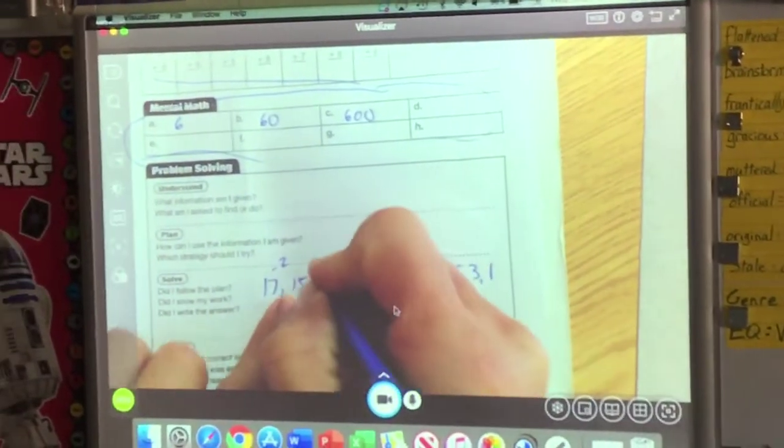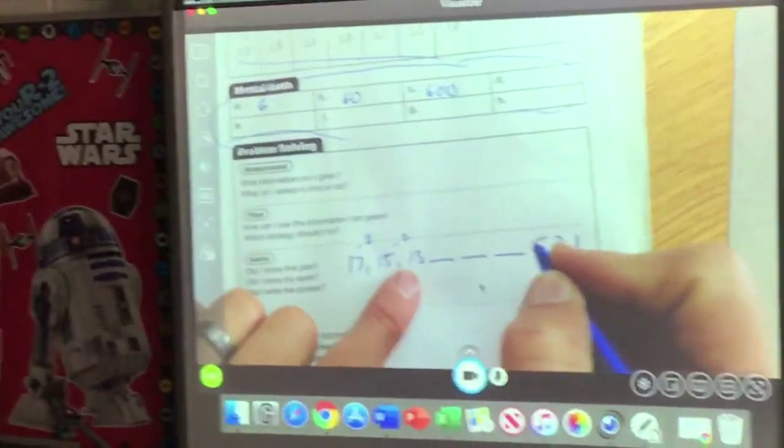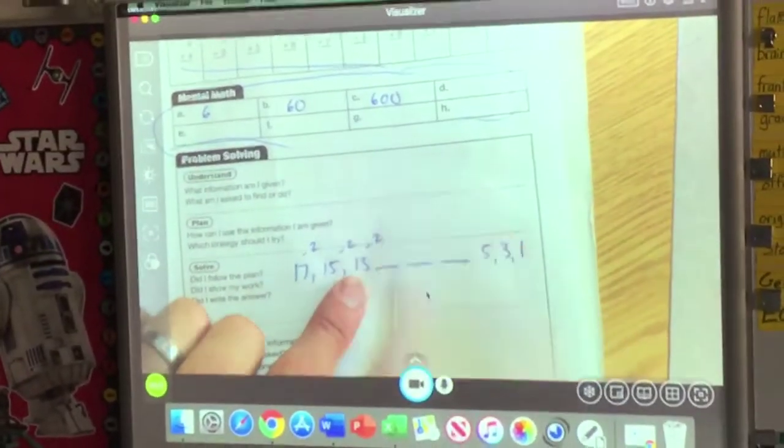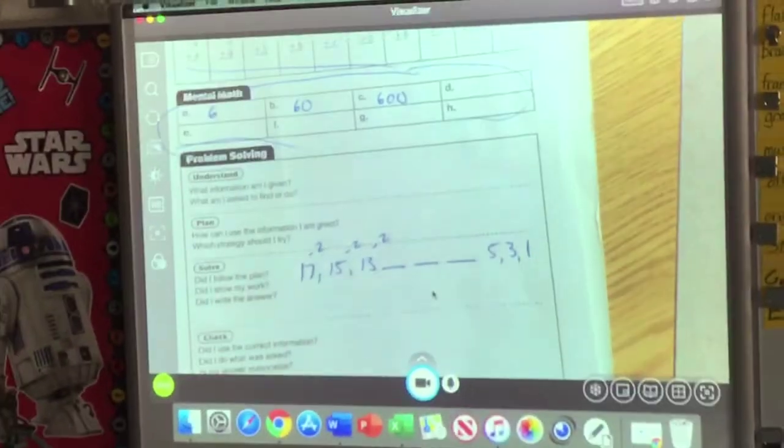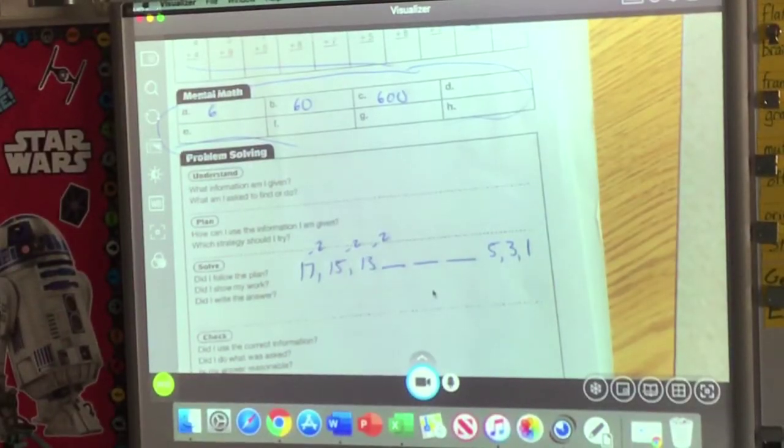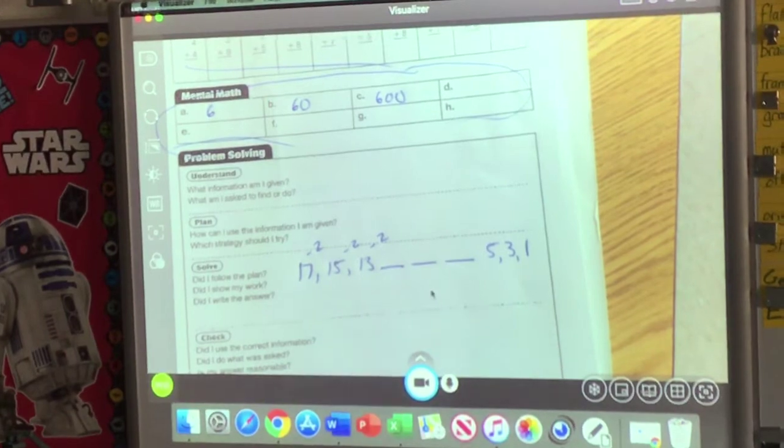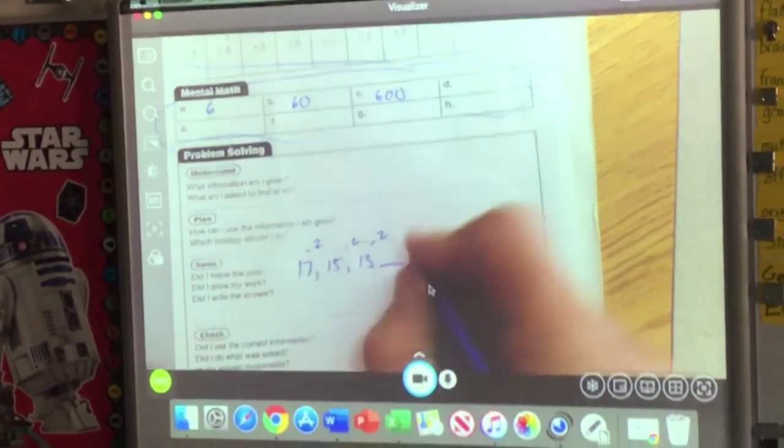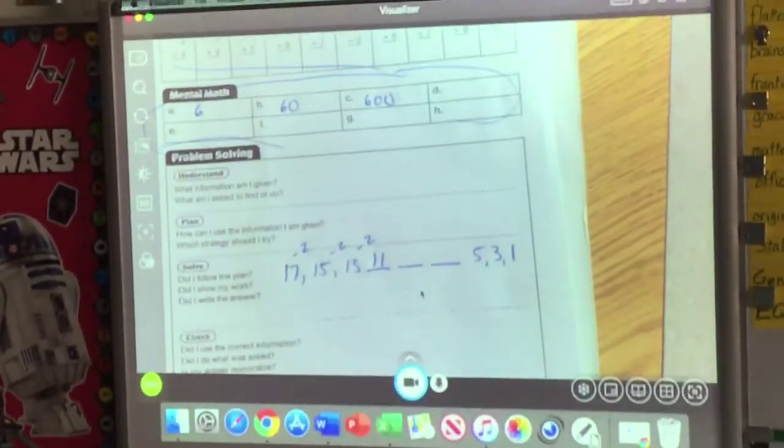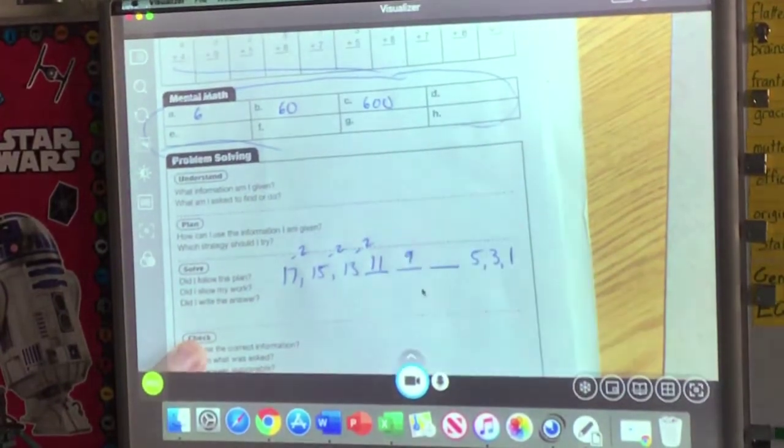So we're actually subtracting 2. Minus 2 equals 15. 15 minus 2. Keep the pattern going. 2, 13 minus 2. 1, 2 is 11. My first answer is 11. 11 minus 2 is 9. 9 minus 2 is 7.